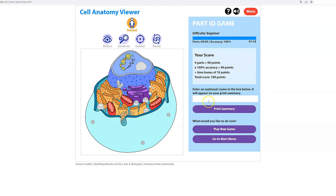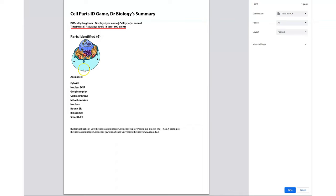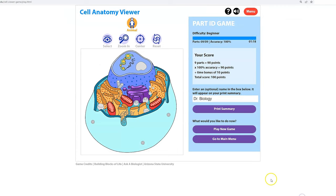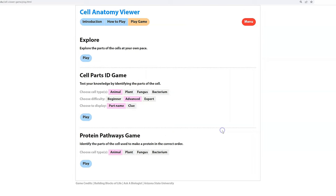Congratulations, you have identified all the parts of the cell. I get a breakdown of my score and it looks pretty good. I got 100 points. I can now go ahead and enter my name if I wanted to. When I print the summary, it tells the score and shows me the parts that I ID'd. I'm not going to bother with printing it. We can go back and play a new game. I can make it more difficult. Actually, let's do this. Let's do beginner and this time let's mix things up. Let's do animal and plant.